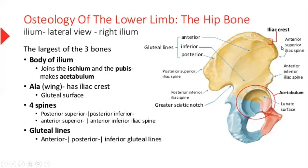The yellow part has three gluteal lines: the inferior gluteal line, the anterior gluteal line, and the posterior gluteal line. In addition, it has four spines: posterior superior iliac spine, posterior inferior iliac spine, anterior superior iliac spine, and anterior inferior iliac spine.